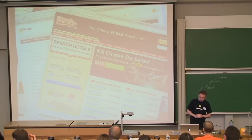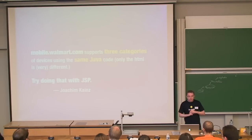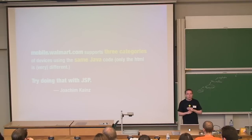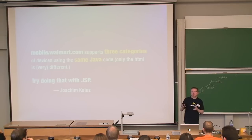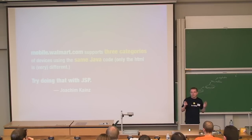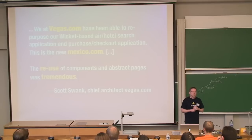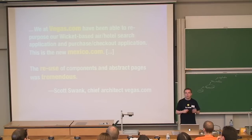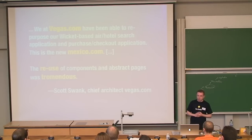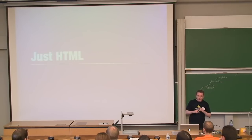A couple of quotes from users: Walmart supports three categories of mobile devices using the same Java code — only the HTML differs. Android and iOS are in the same ballpark, but Windows Mobile 6 is really a drag with parsing HTML. The folks from Vegas.com also launched Mexico.com last year, reusing their existing application to create a whole new vacation booking website. They found the reuse of their code was tremendous.